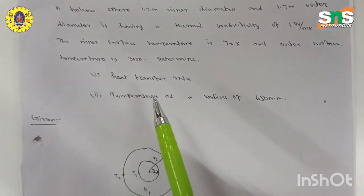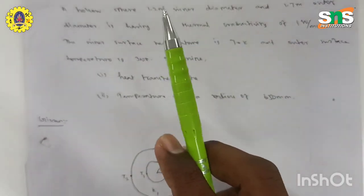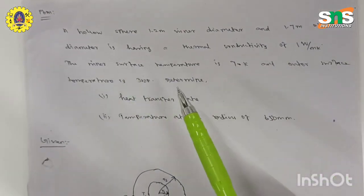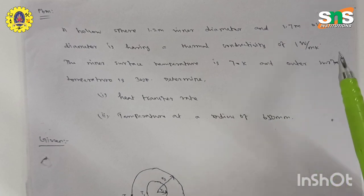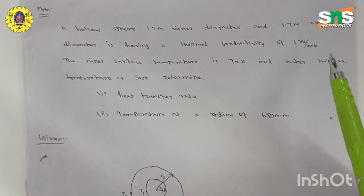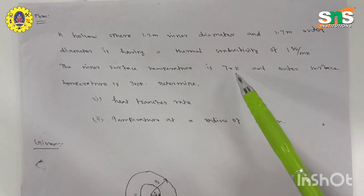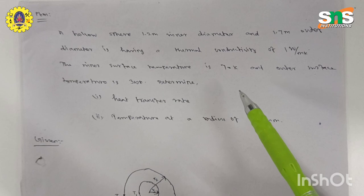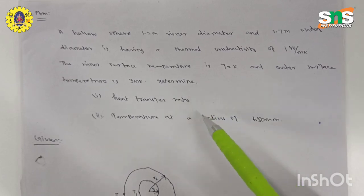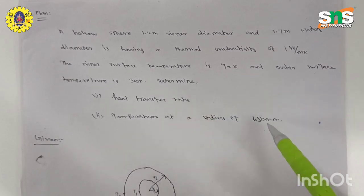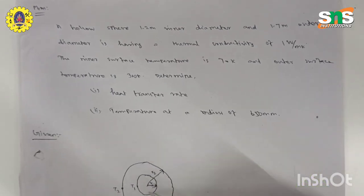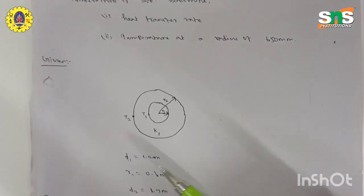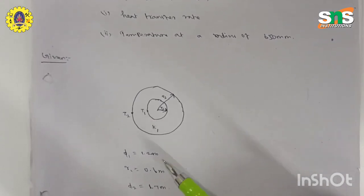The given problem: a hollow sphere has an inner diameter of 1.2 meters and an outer diameter of 1.7 meters, with a thermal conductivity of 1 watt per meter Kelvin. The inner surface temperature is 70 Kelvin and the outer surface temperature is 300 Kelvin. Determine the heat transfer rate and the temperature at a radius of 650 mm.